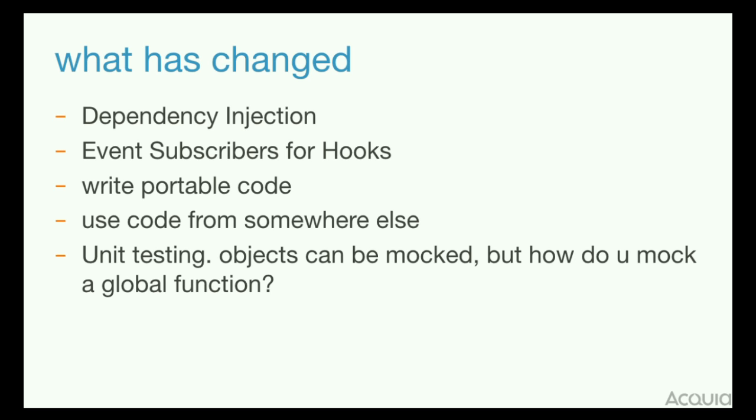Some things that have changed: we have dependency injection for core services and event subscribers for hooks. We can write portable code with services and dependency injection, allowing us to use other people's code without worrying about complex implementations. There's a lot of non-Drupal code that awesome people have created that we can simply use with services. Unlike Drupal hooks, we can now write events that can be unit-tested — we can have mocked objects and mocked dependencies, which certainly wasn't possible with Drupal 7.